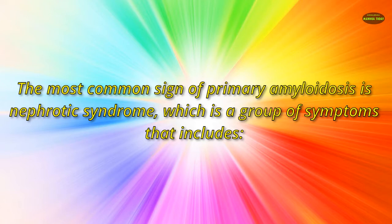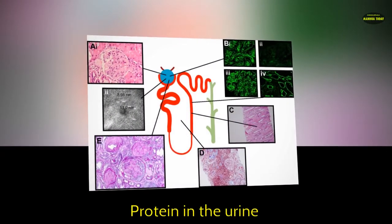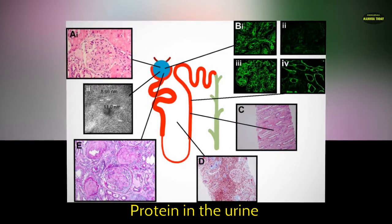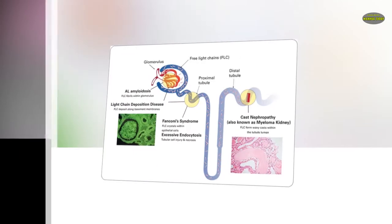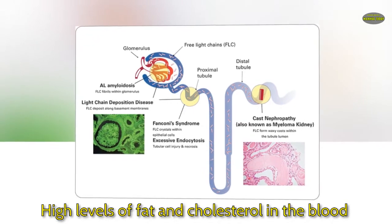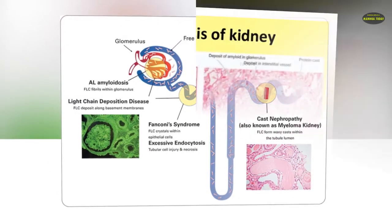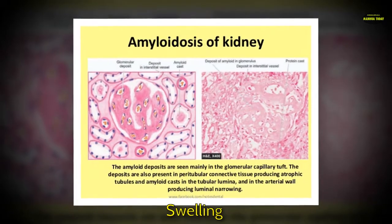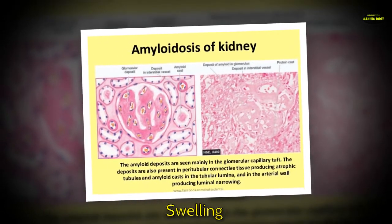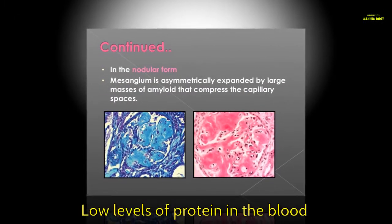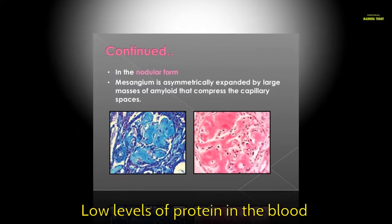The most common sign of primary amyloidosis is nephrotic syndrome, which is a group of symptoms that includes protein in the urine, high levels of fat and cholesterol in the blood, swelling, and low levels of protein in the blood.